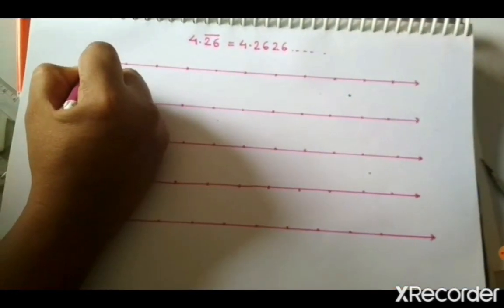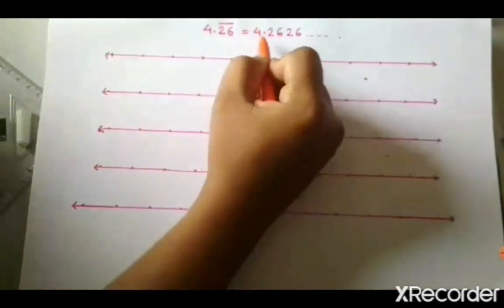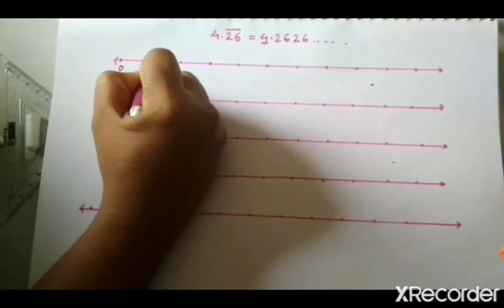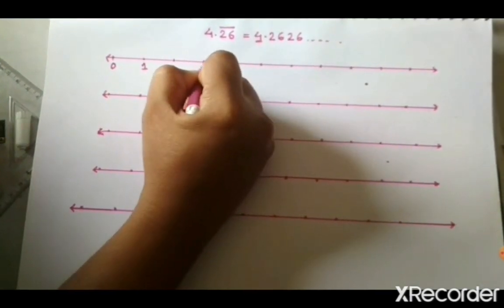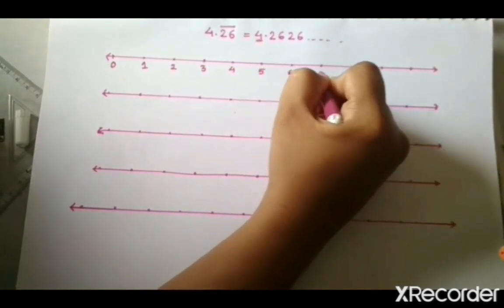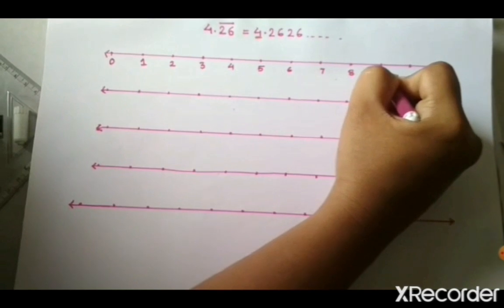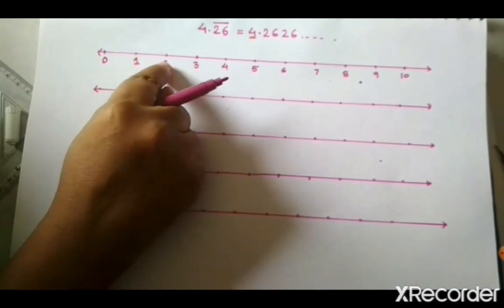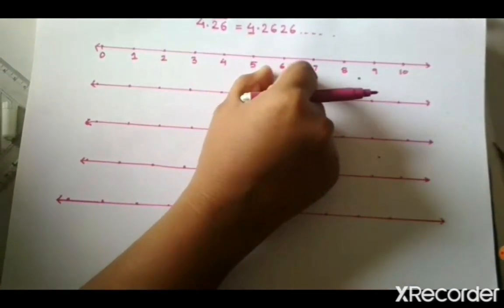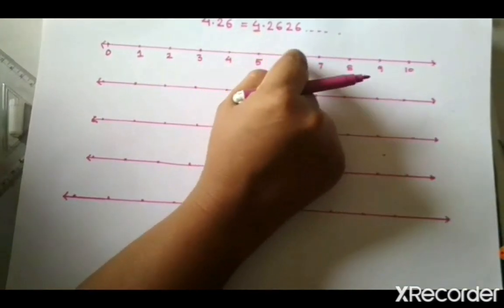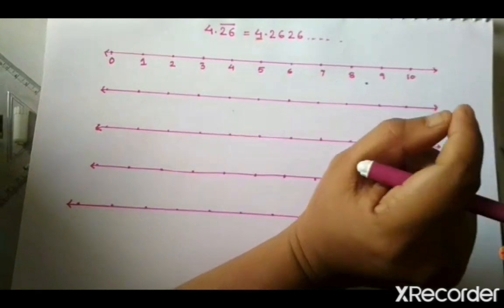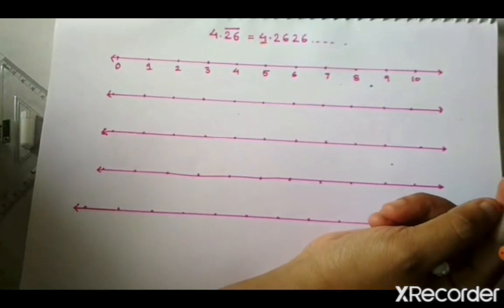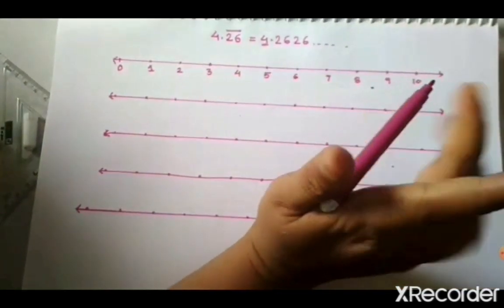Let us start now. The number is 4. First of all, we draw a number line: 0, 1, 2, 3, 4, 5, 6, 7, 8, 9, and 10. This is a simple number line. Take the same distance between two numbers — that is very important. Take a proper scale and pencil with a unit distance of 1 cm or 2 cm; in your book you can take it as 1 cm only.